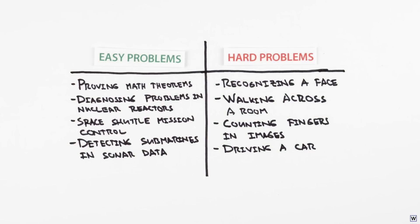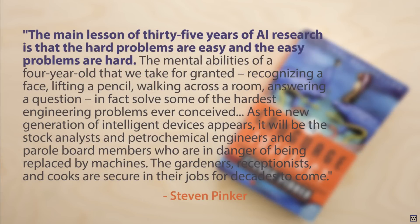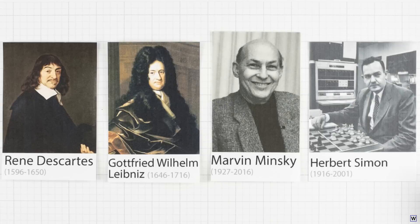As the linguist and cognitive scientist Steven Pinker writes, 'The main lesson of 35 years of AI research is that the hard problems are easy, and the easy problems are hard.' This phenomenon, known today as Moravec's Paradox, missed by generations of brilliant scientists, is a result of misunderstanding just what intelligence is.